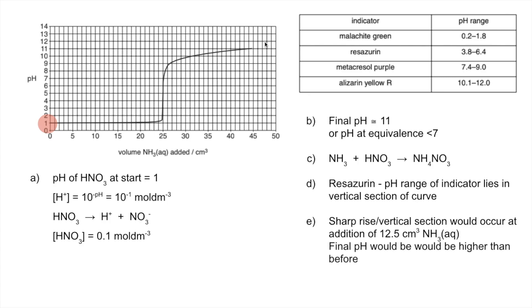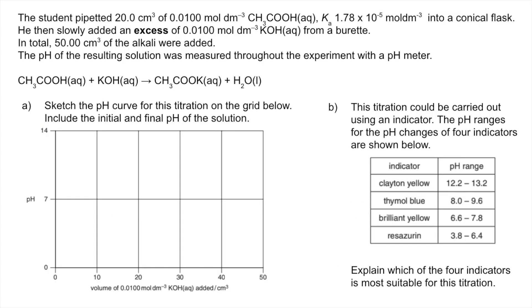Here's number two. We'll start with the initial pH of the solution. Ethanoic acid is a weak acid so the H+ concentration of a weak acid is the square root of the acid dissociation constant multiplied by the initial concentration of the acid. When you put those numbers in, Ka 1.78 times 10 to the minus 5 and the initial concentration of 0.01, you get an H+ concentration of that. Therefore we just need to minus log that and we get the pH of 3.37.